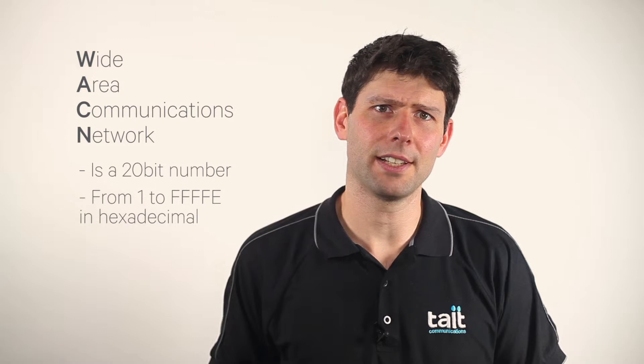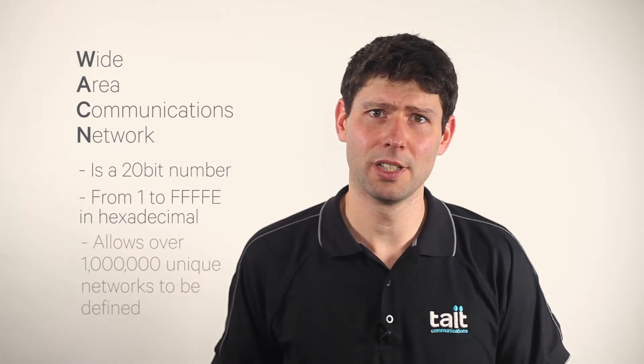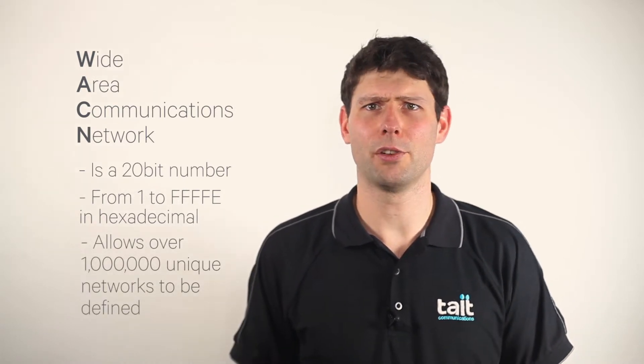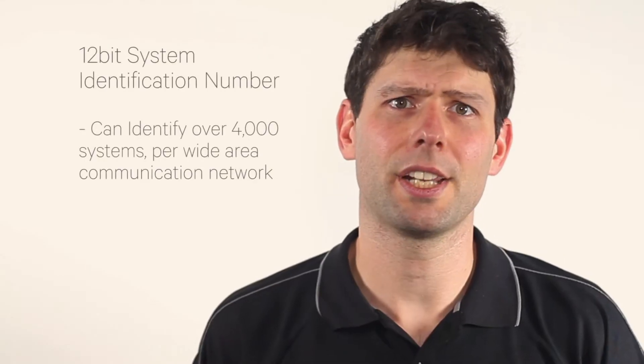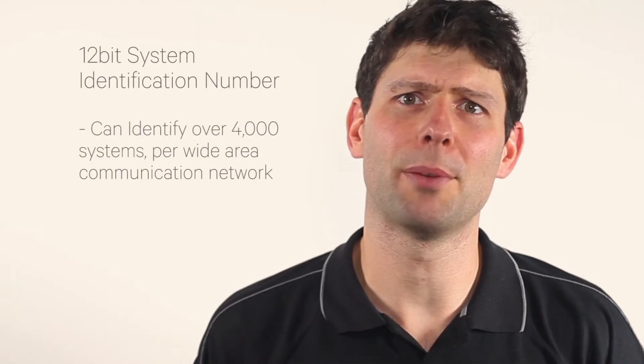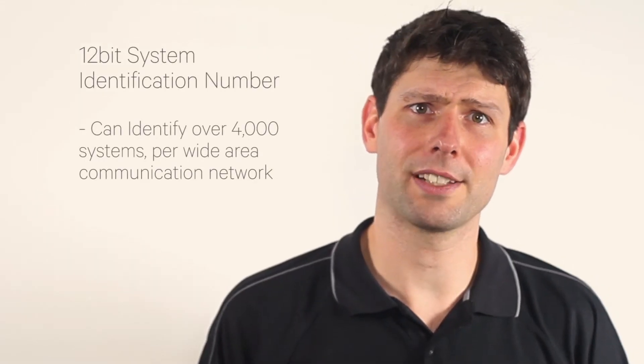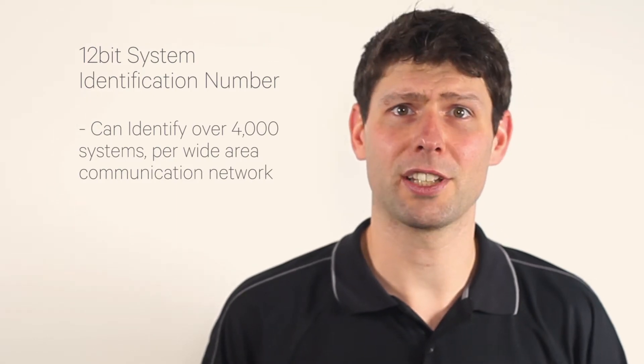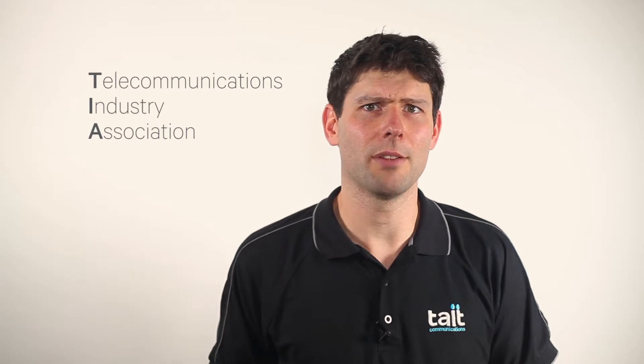A wide area communications network address or WACN is a 20-bit number from 1 to FFFFE in hexadecimal, which allows over 1 million unique networks to be defined. There is then a system identity or a 12-bit number that can identify over 4,000 systems per wide area communication network. The TIA have a guideline document that describes how WACN and system IDs could be allocated to prevent two agencies having a system with the same address.